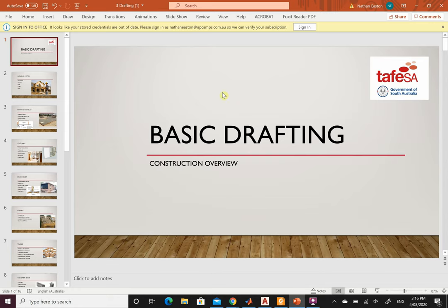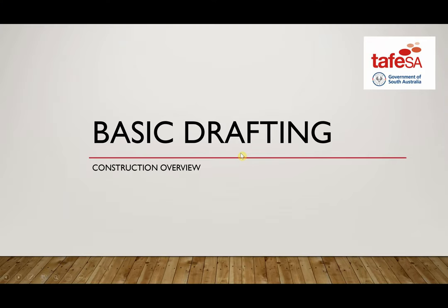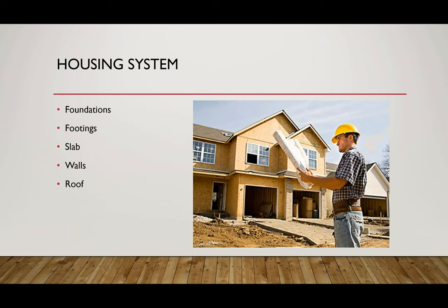Looking at our housing system — our houses are made up of different components. Usually what happens is we get a flat block and we start building on it. The first part of the house is the foundations, which is below the ground, and includes the footings — that's what holds our building to the earth. The walls come next, where carpenters put up timber-framed or steel construction, and obviously you've got your roof to encase the house.